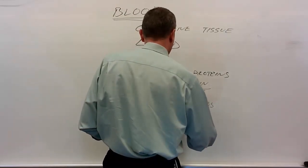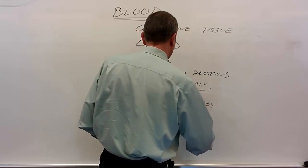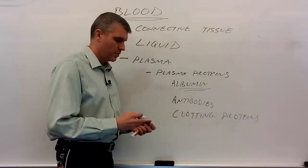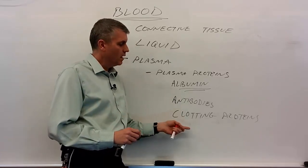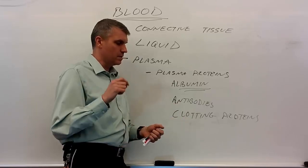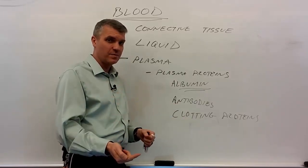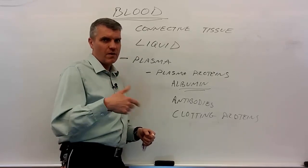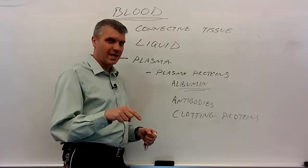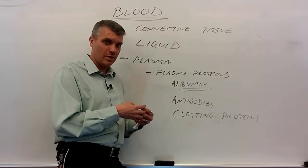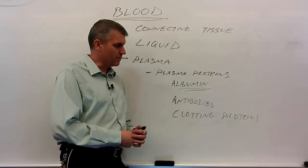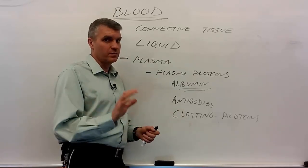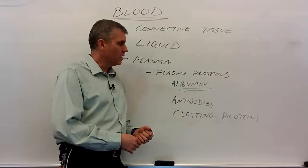Clotting proteins are important for hemostasis. They help activate fibrin — fibrin exists floating in blood as fibrinogen, the inactive version. Once activated, fibrin molecules link together to form a blood clot. Clotting proteins include fibrinogen, plus multiple clotting factors involved in ultimately activating fibrin.